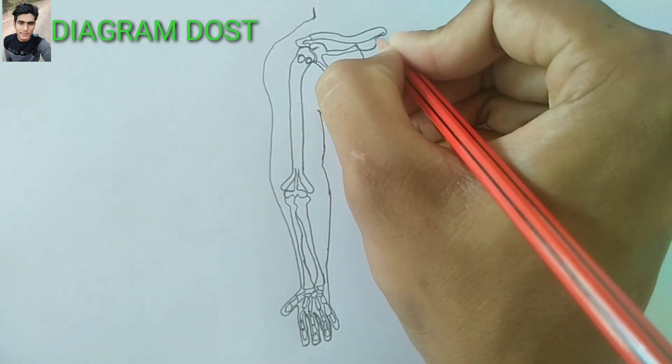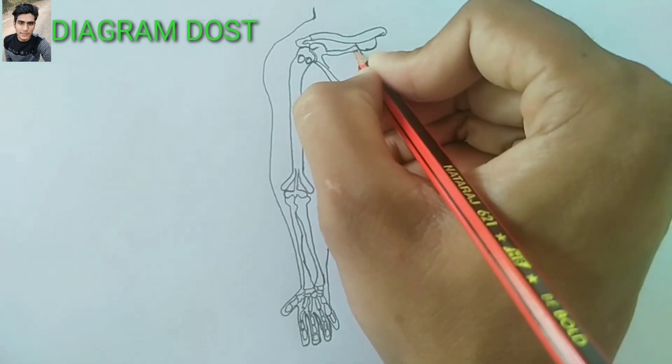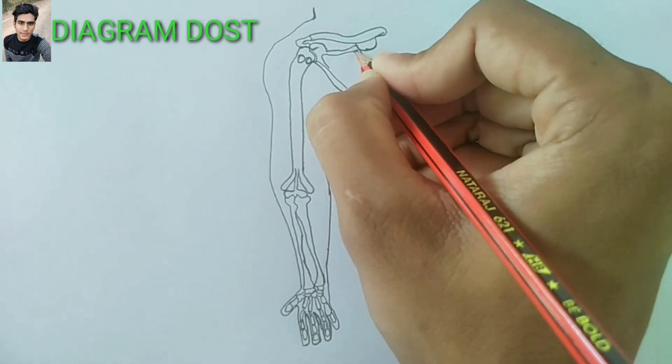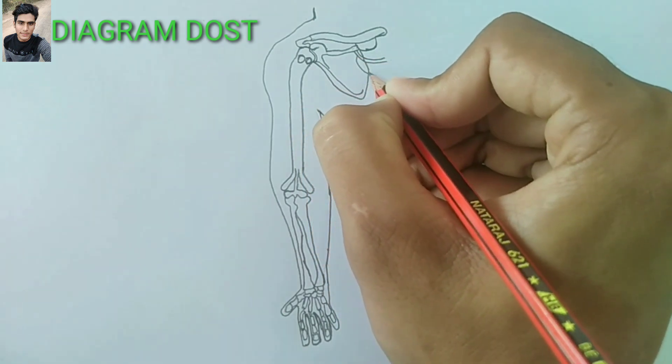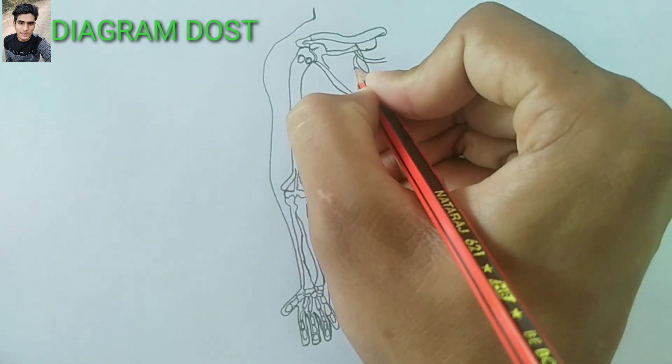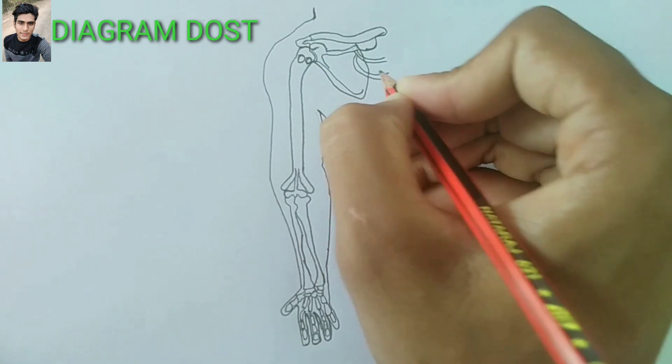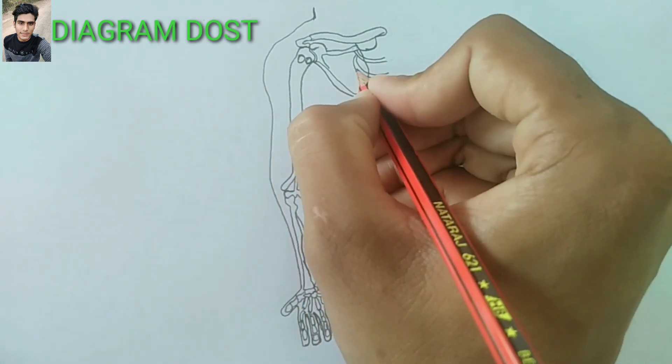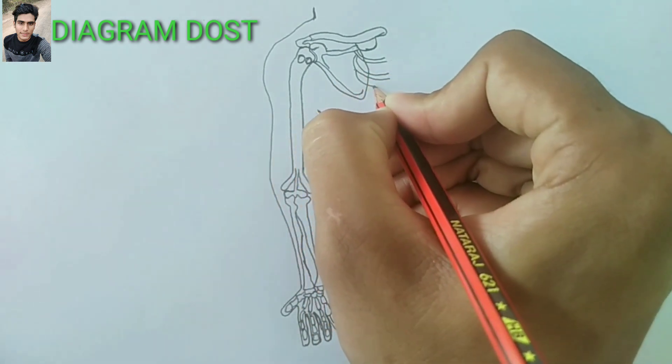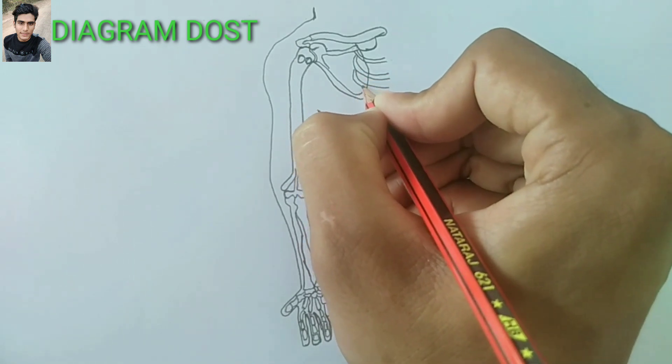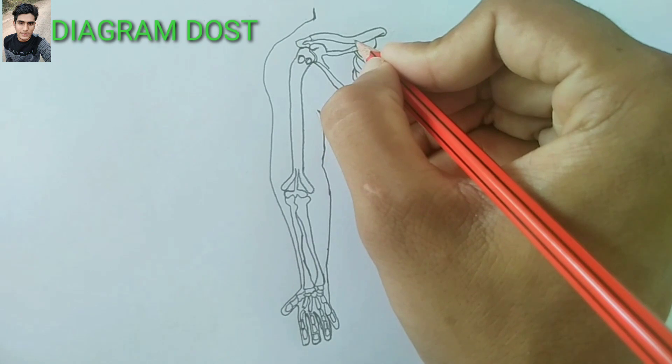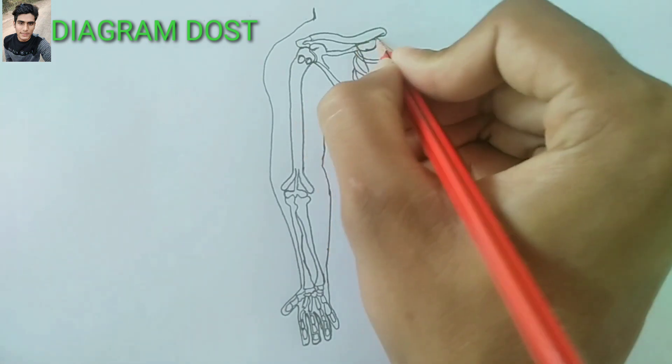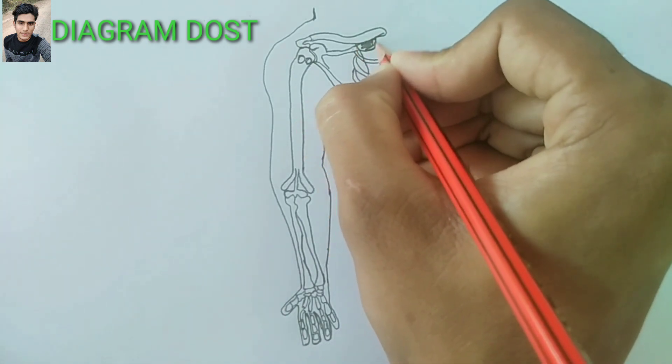Now I am drawing ribs. It is rib, a curve. These curved lines are ribs. Now I will make them darker to be easier to recognize that they are ribs.